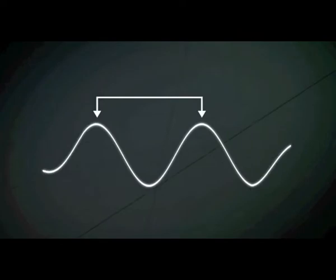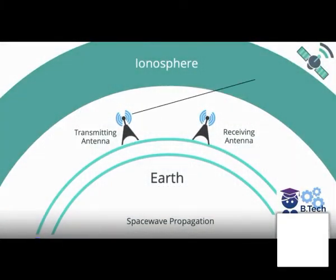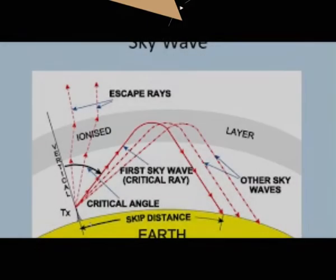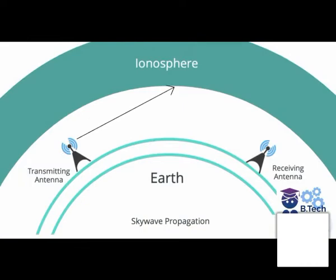In order to increase the range of ground wave, we must increase the power of transmission. In space wave propagation, some waves travel towards the sky, pierce through the layers of atmosphere, and escape into space — these are known as space waves. There is something called the critical angle in space wave propagation. The waves will propagate through space only when the radio waves reach the layer of space and pierce it. The angle formed between that layer and the direction of propagation is known as the critical angle.